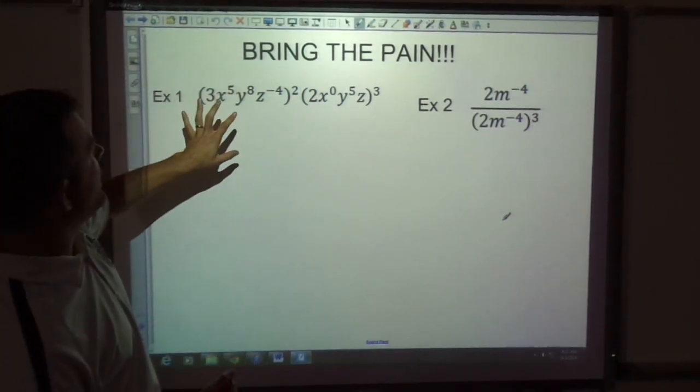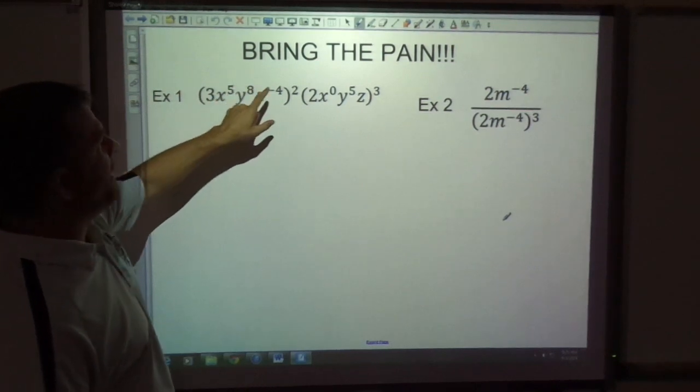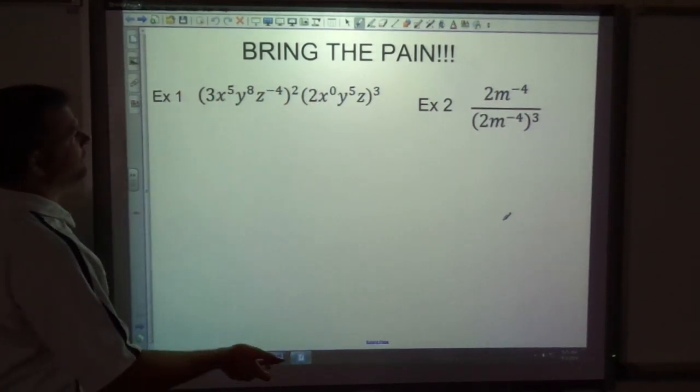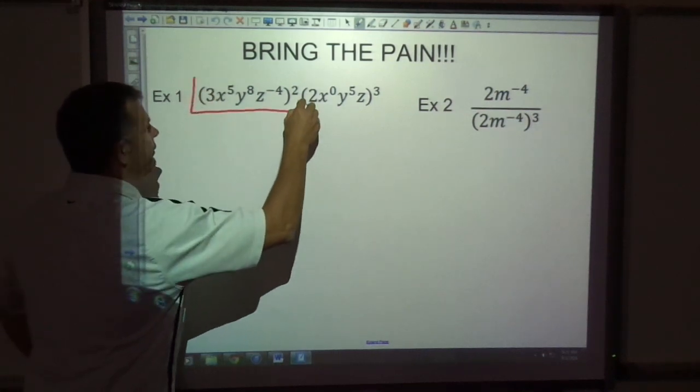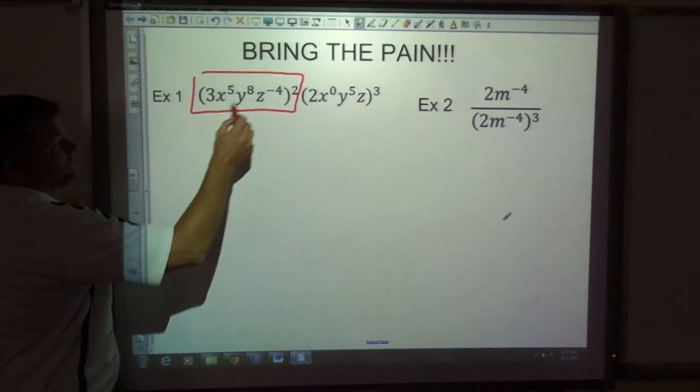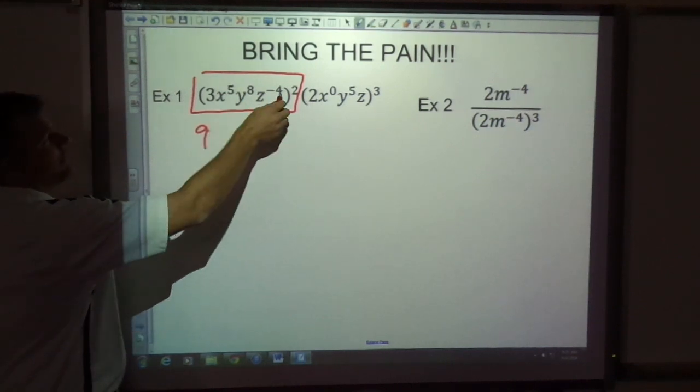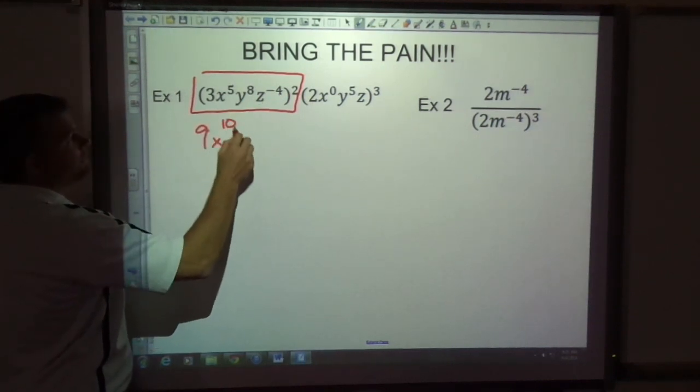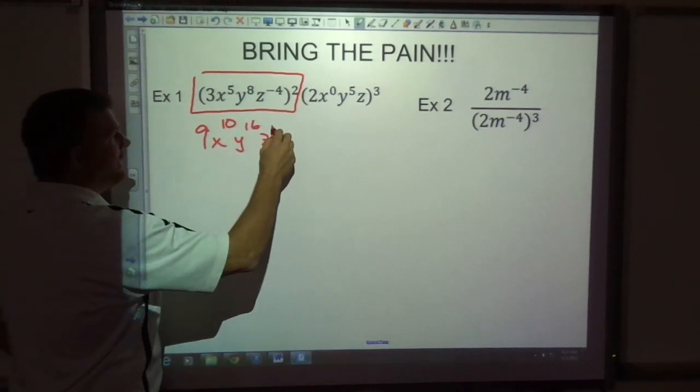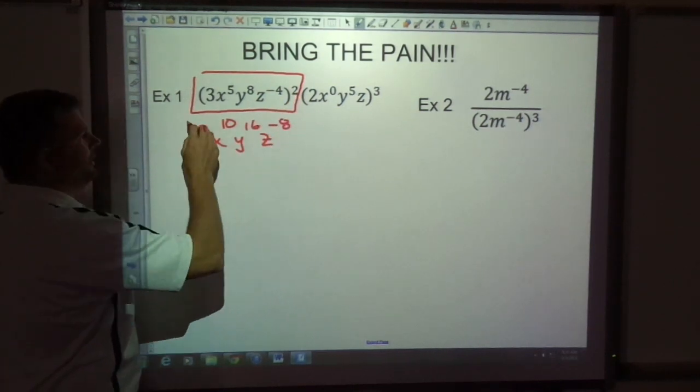So the first problem, we've got multiplication but we also have power to power. When I see power to power, that's what I always want to try to deal with first. So here's power to power and I know 3 to the second power is 9. I multiply the exponents, y to the 16th, z to the negative 8, and I'm just going to write it negative, I'll deal with that in a moment.